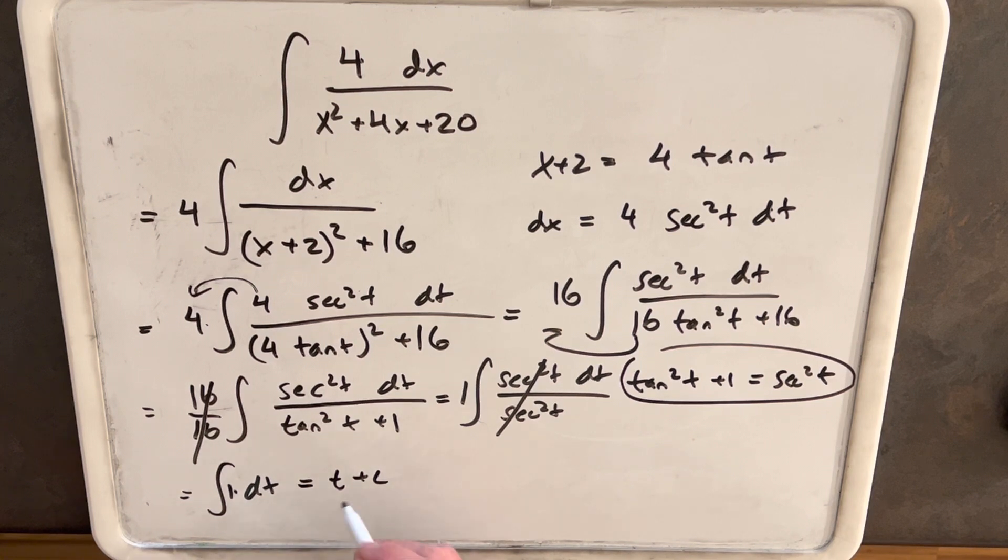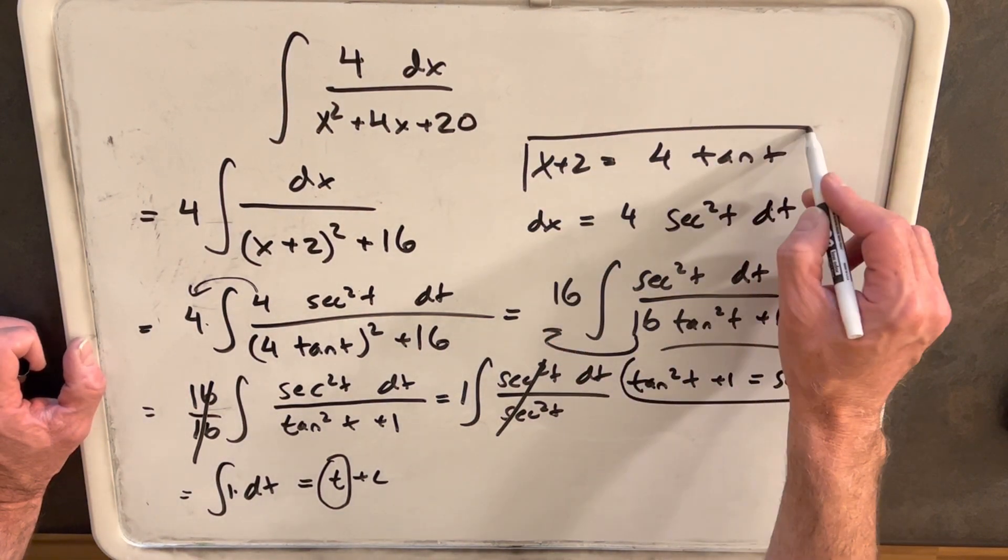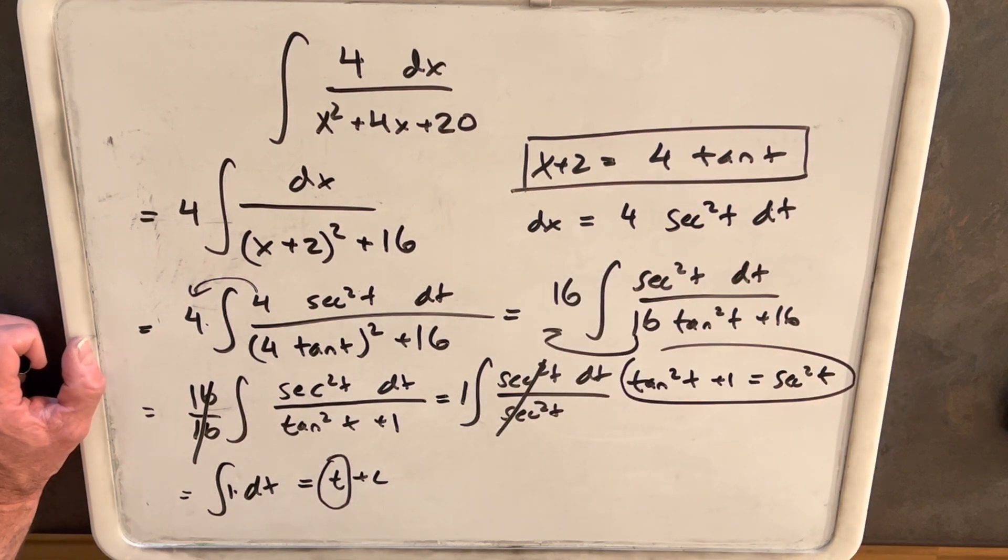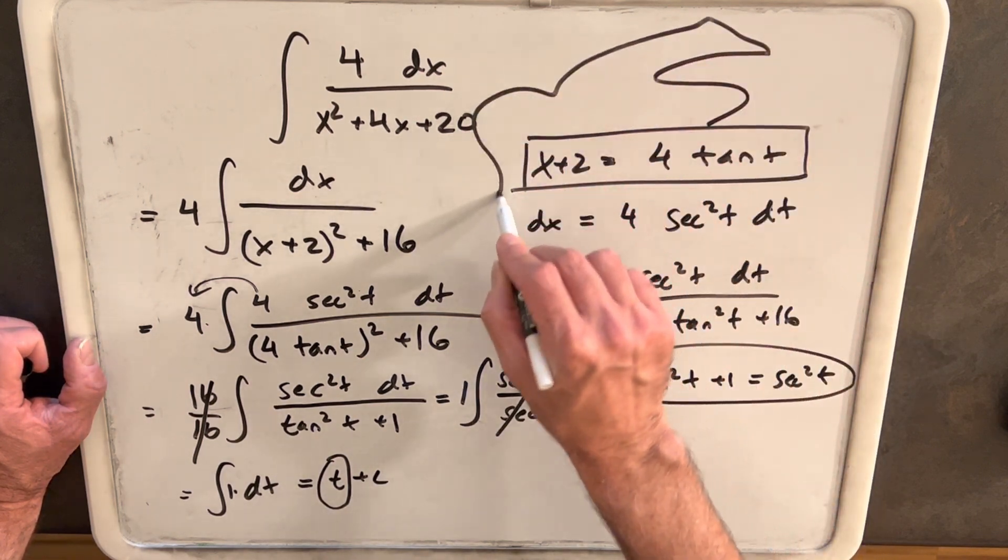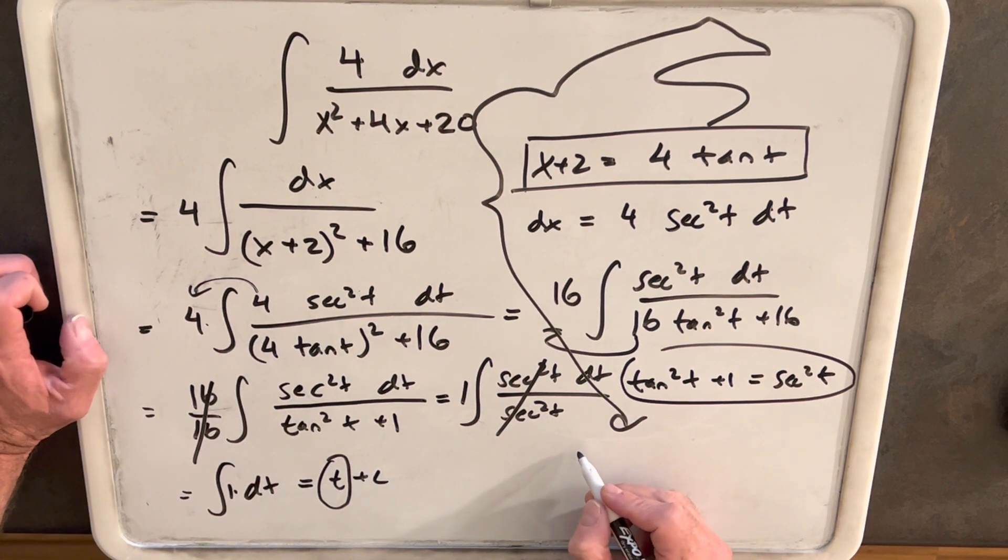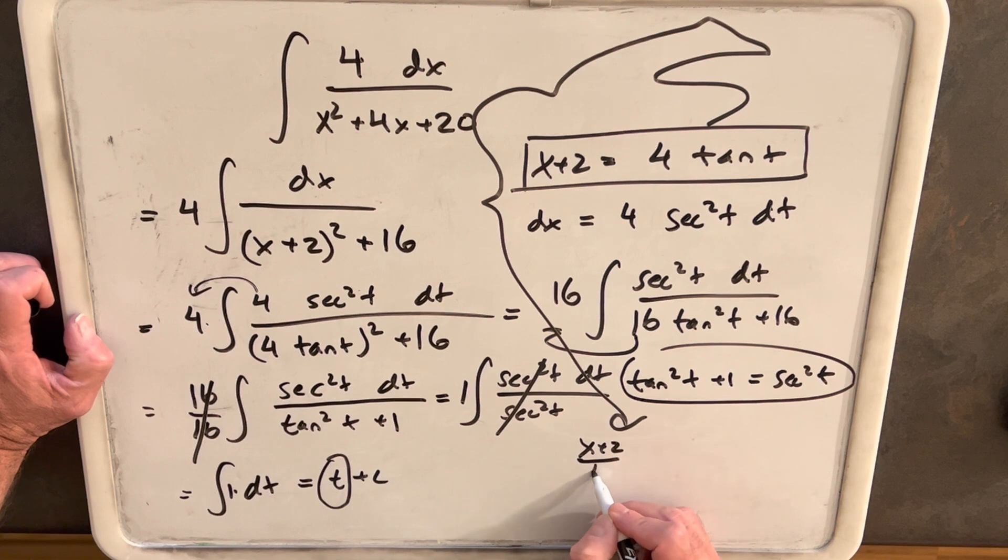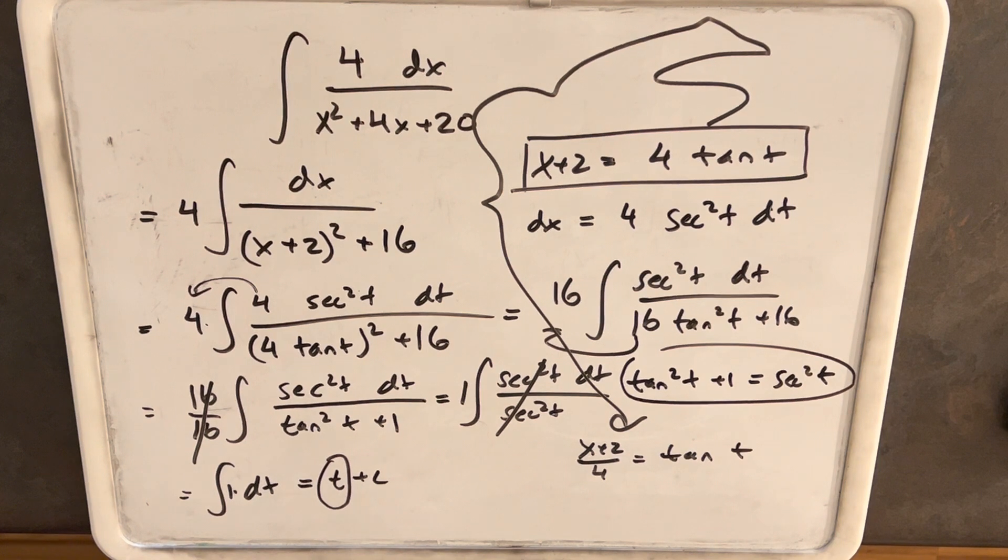So to finish this off, all we need to do is find out what t is. We do need to do a little bit more work, but we don't have t. We just have this expression here to work with. But what we can do, let's bring it down here. We'll divide both sides by 4. We'll have x plus 2 divided by 4 equals tan t. Then to find t, we'll just take the inverse on both sides. So we'll have t equals tan inverse, x plus 2 over 4.